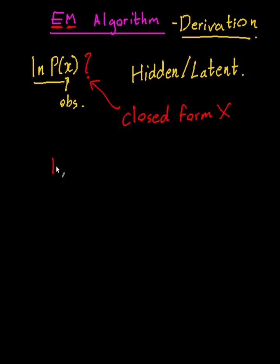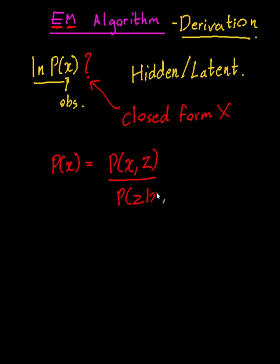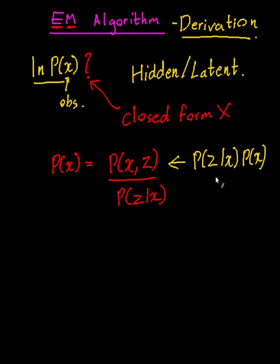p(x), the probability of x, can be written as the probability of x and z divided by the probability of z given x. If you're wondering how this came to be: the joint probability p(x,z) can be written as p(z|x) times p(x), thanks to Bayes' theorem. So that's the joint probability relationship.